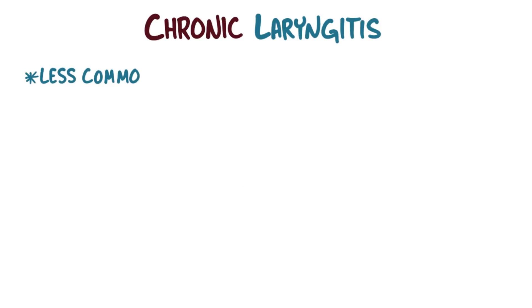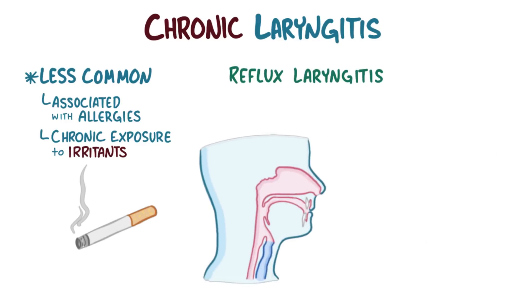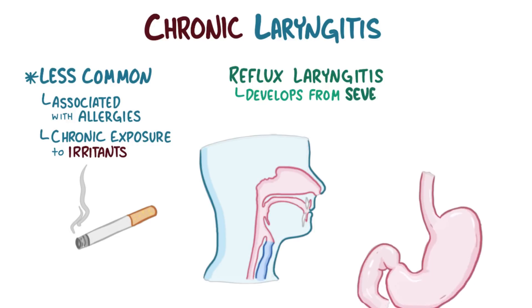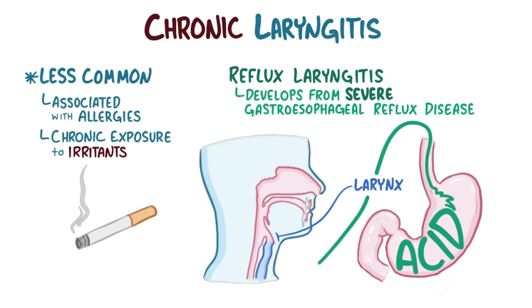Chronic laryngitis is less common, and is associated with allergies, or the result of chronic exposure to irritating agents like cigarette smoke. Reflux laryngitis is another cause of chronic laryngitis, and develops in people with severe gastroesophageal reflux disease, where acid from the stomach goes all the way up the esophagus into the pharynx. From there, the acid can contact and irritate the larynx.